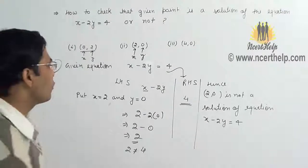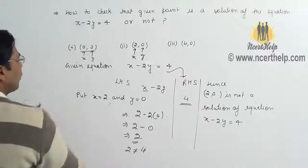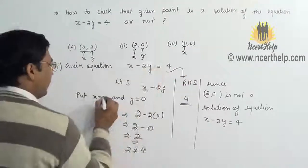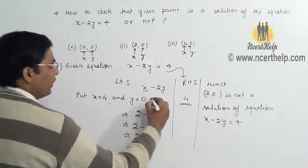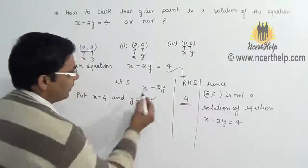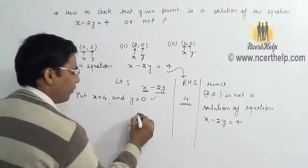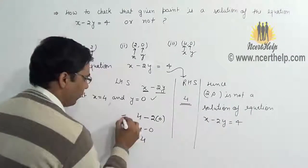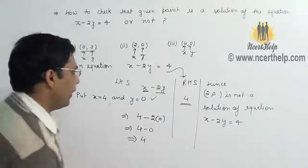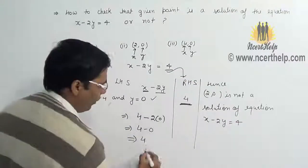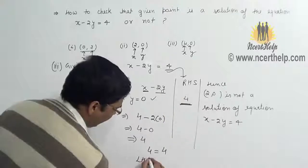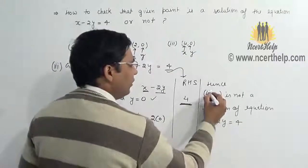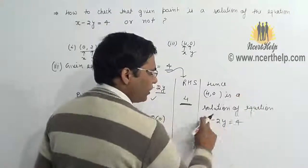Hence the point 2 comma 0 is not a solution set of the given equation. Now check for the third point. In the third point, X equals 4 and Y equals 0. Following the same steps: 4 minus 2 times 0 equals 4 minus 0 equals 4. And the value of RHS is also 4. So we have 4 equals 4, or LHS equals RHS.